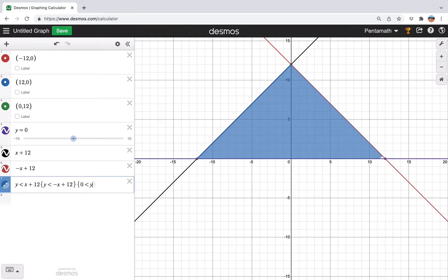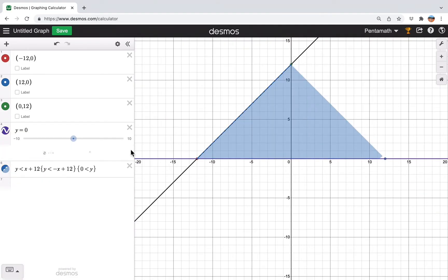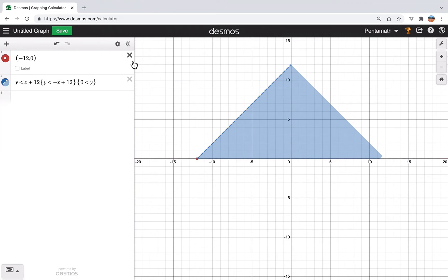And finally, y is more than zero. And now we have our triangle, we can just delete everything else we have because we're done with the triangle.